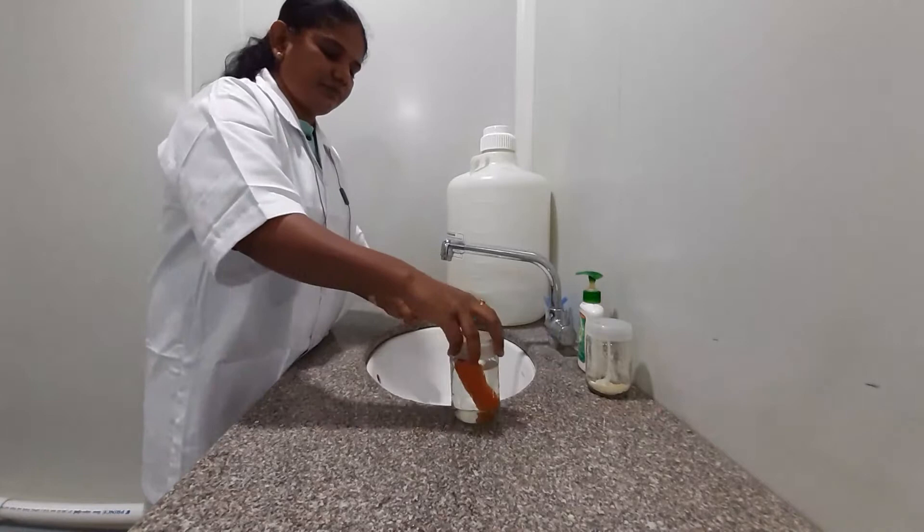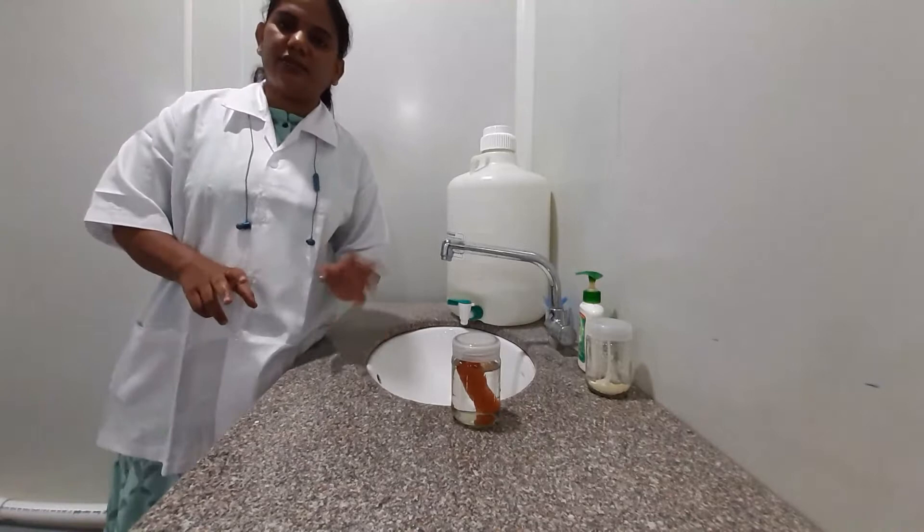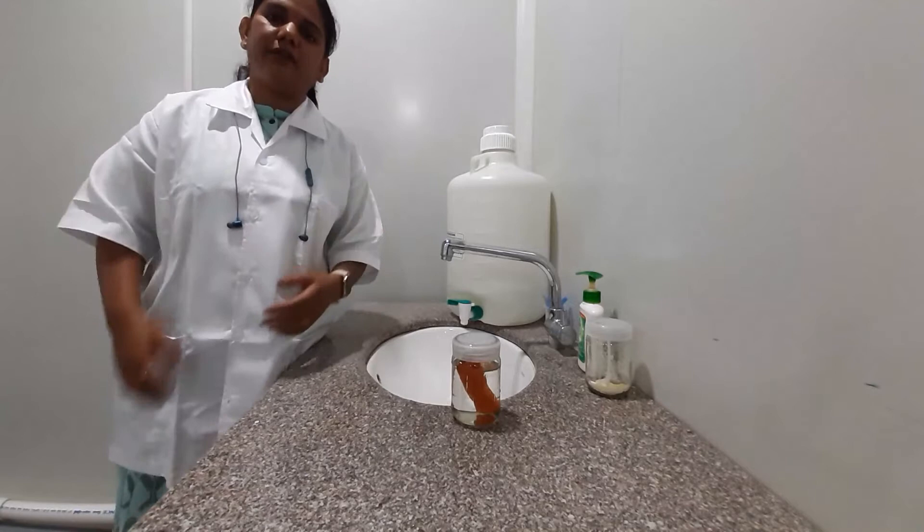Next, surface sterilization treatment will be carried out with the help of two chemicals: sodium hypochlorite and mercury chloride. This will be carried out in the laminar air flow.